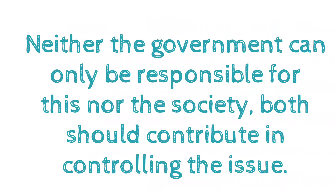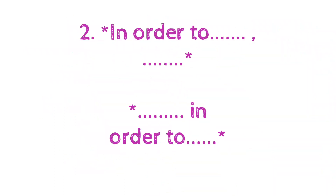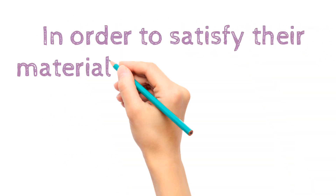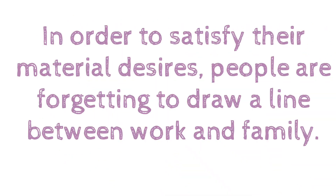Next is the 'in order to' structure: sentence, comma, 'in order to', sentence. It can also be used in the middle of a sentence. For example: 'In order to satisfy their material desires, people are forgetting to draw a line between work and family.' Here 'in order to' is used at the beginning.